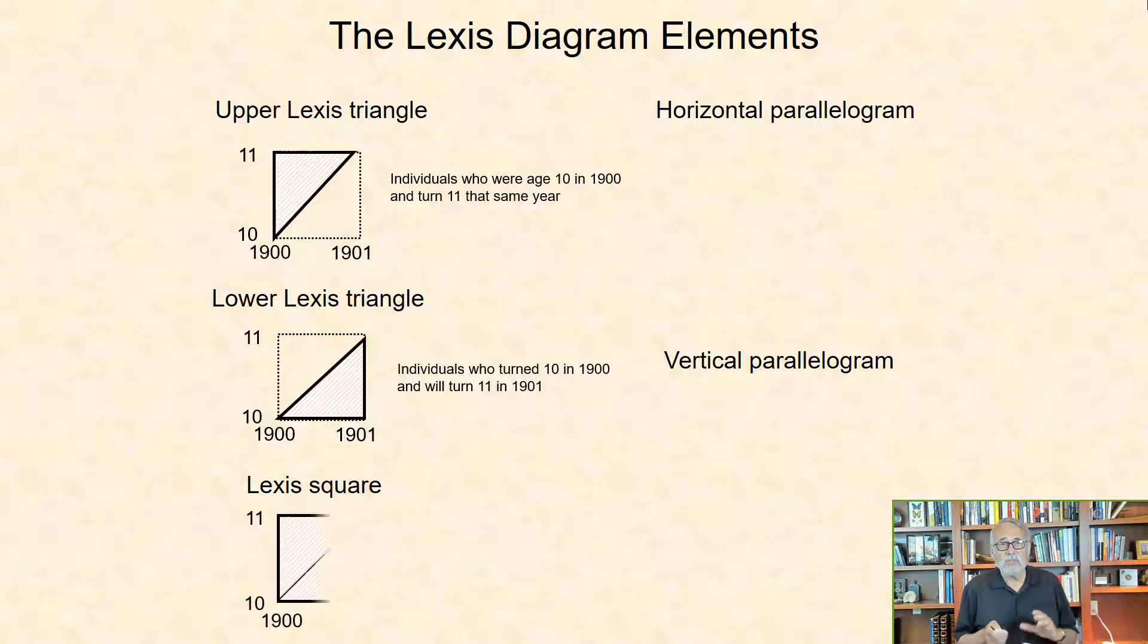The lower Lexis Triangle depicts individuals who turned 10 in 1900 and turned 11 in 1901.